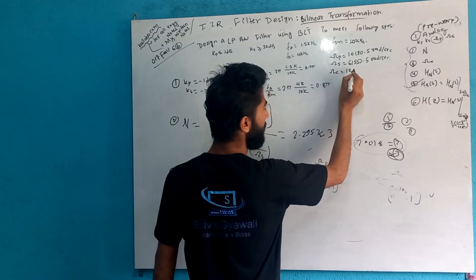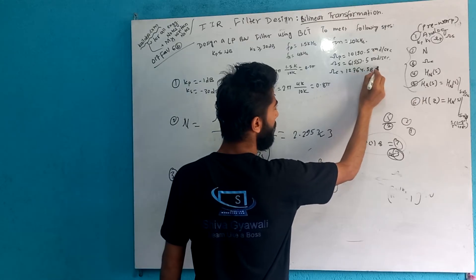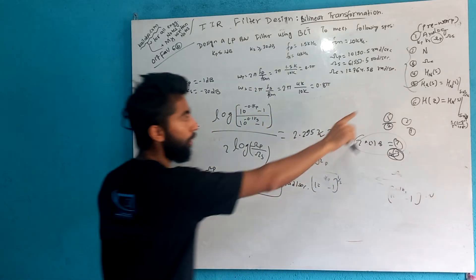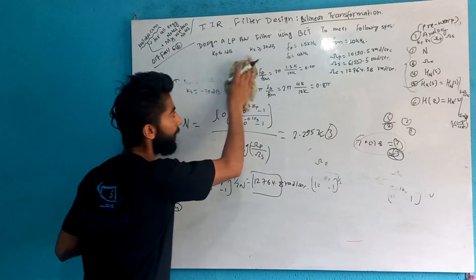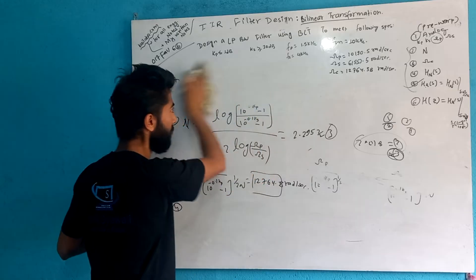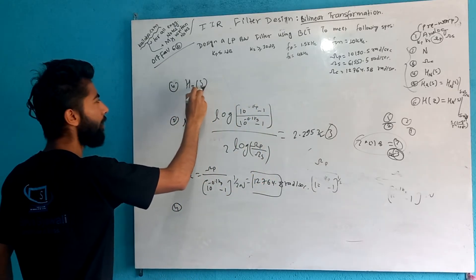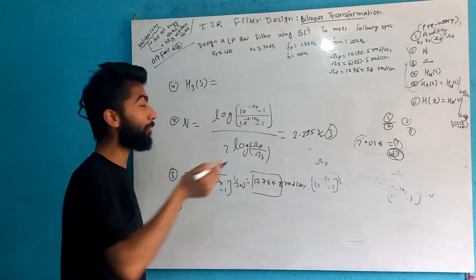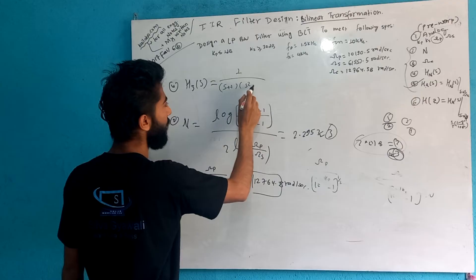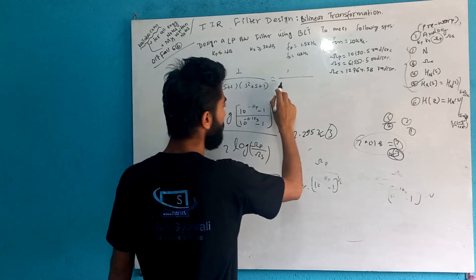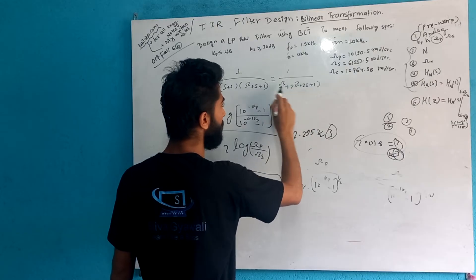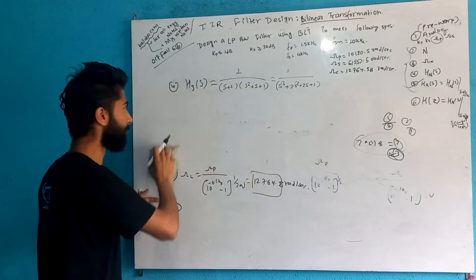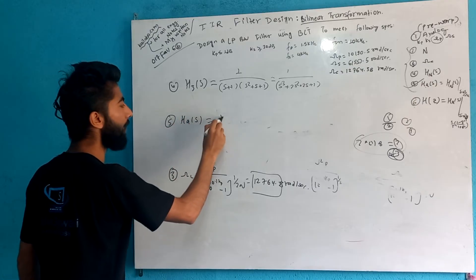So I am going to note that omega_c = 12764.38 radians per second. Now, for step 4, I need the normalized transfer function for a Butterworth filter of order 3. That is: H_n(s) = 1 / [(s+1)(s² + s + 1)], multiplied out as (s+1)(s² + 2s + 1).